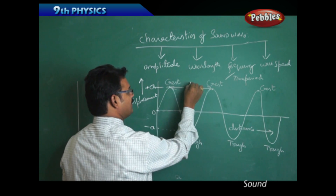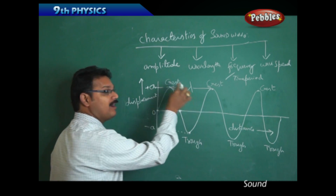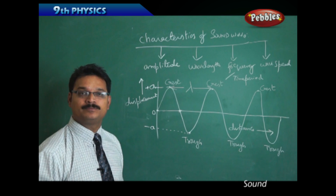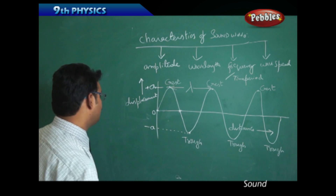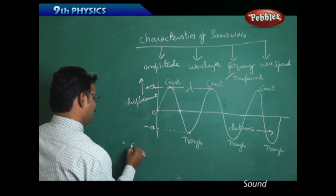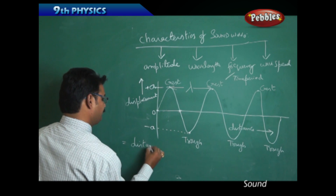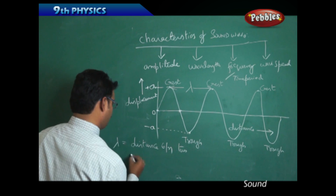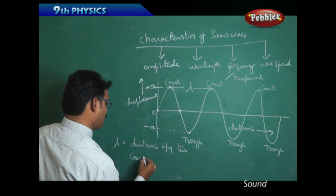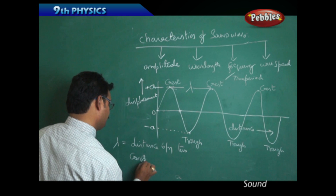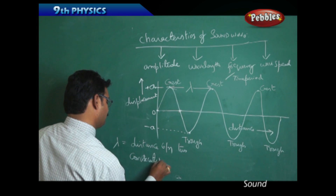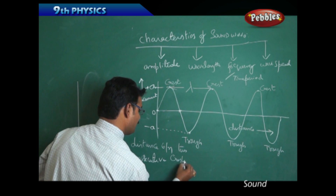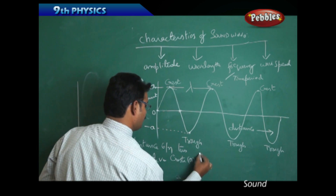The distance between two consecutive crests represents the symbol lambda. This lambda is called wavelength. Wavelength is defined as the distance between two consecutive crests or two consecutive troughs.